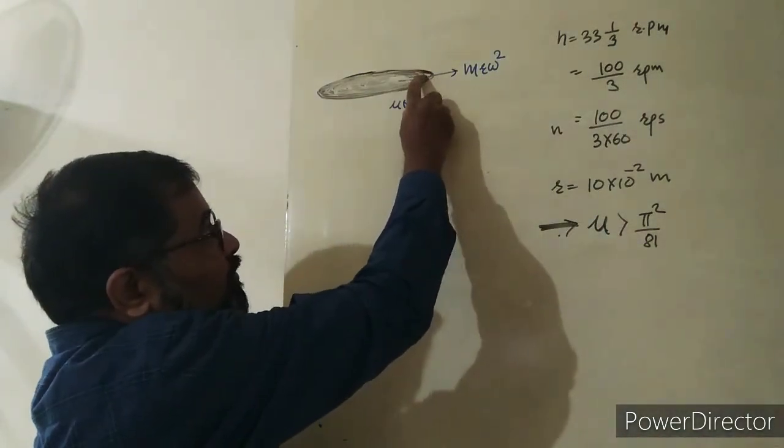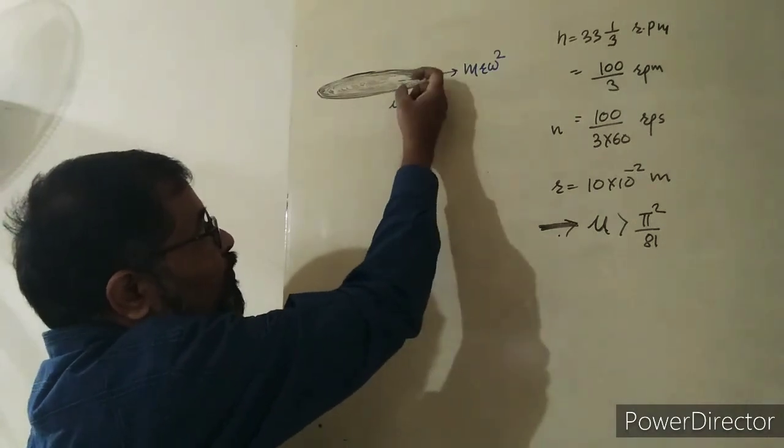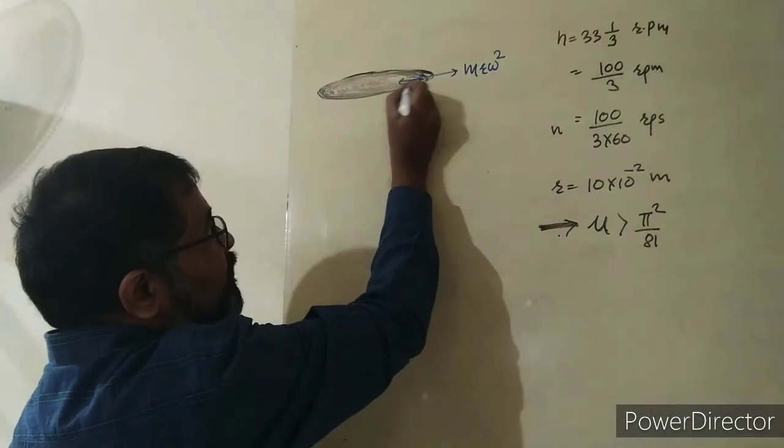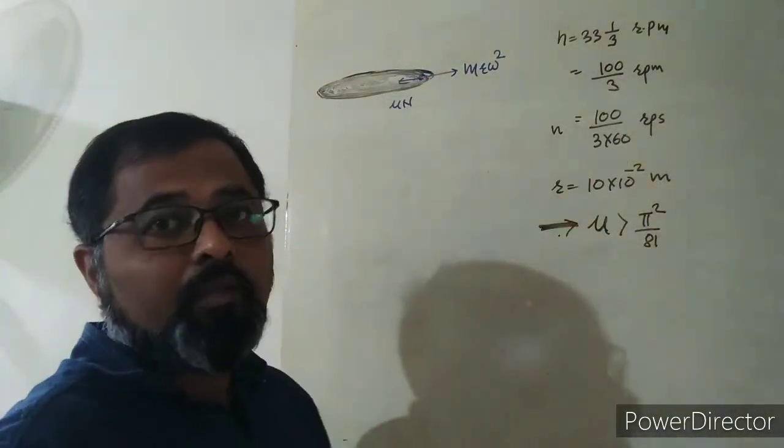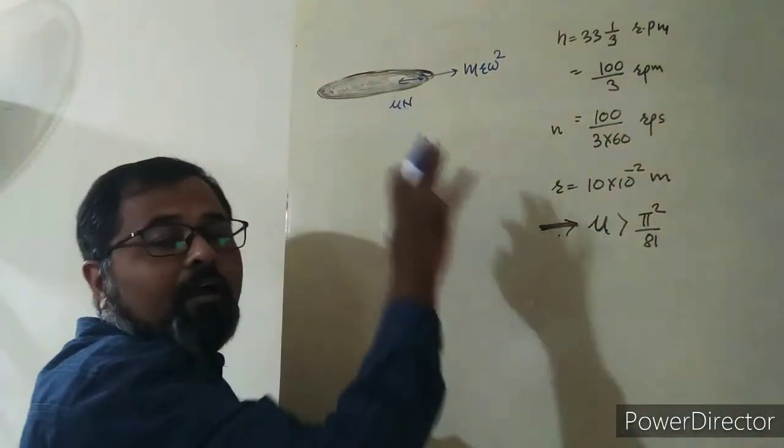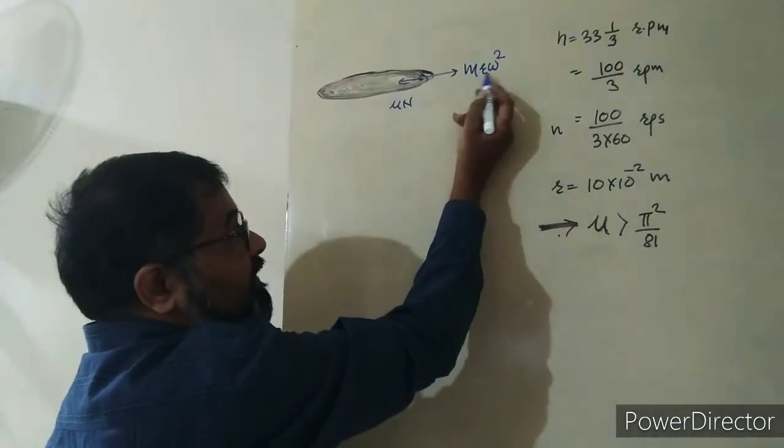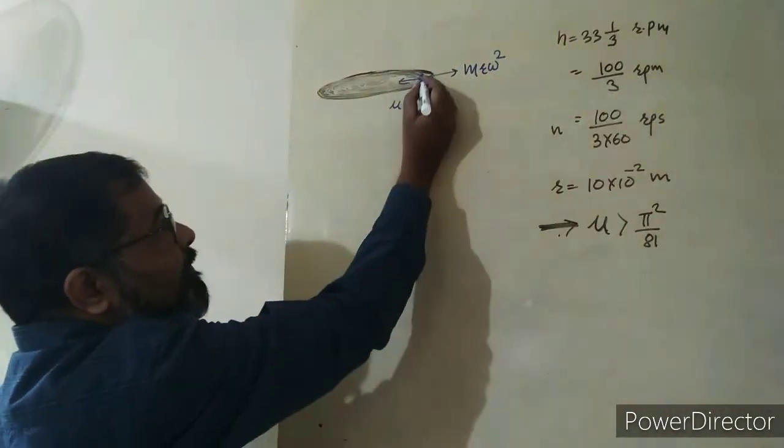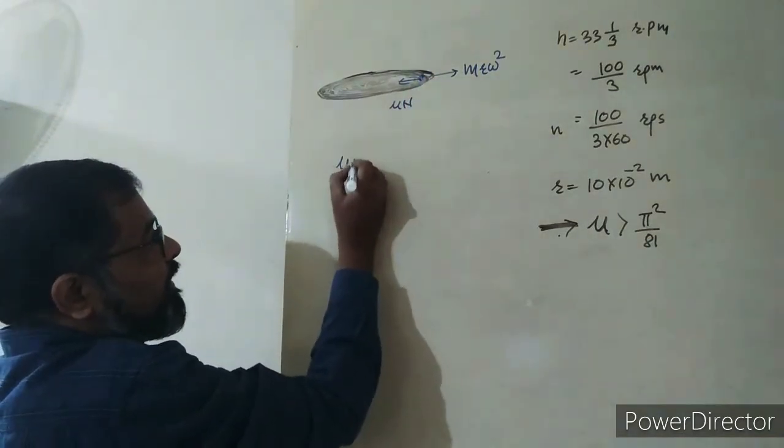But between the mosquito's body and the disk surface, there will be frictional force. This frictional force will oppose its outward motion. If the frictional force is sufficient to balance it, the mosquito won't be thrown out and will stay in place.